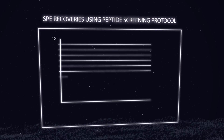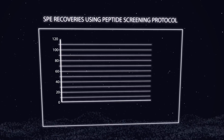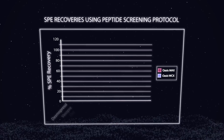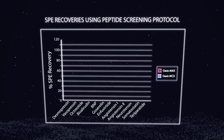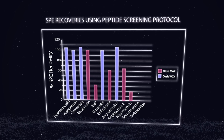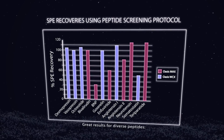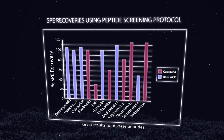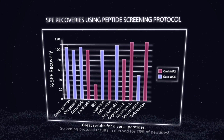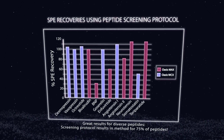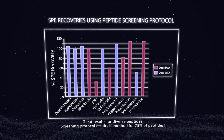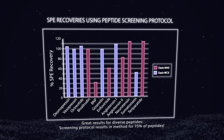We ran this new protocol across a wide range of different peptides, looking at recovery. For most of them we got excellent recovery — greater than 80% — meeting our parameters. Out of all those peptides, 75% had great recoveries. Only three were slightly below the 80% threshold, and for those we optimized by modifying the sample pretreatment to disrupt drug-protein binding or adjusting a wash step to increase peptide solubility.